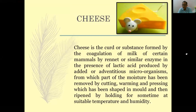Cheese is the curd or substance which is found by the coagulation of milk — it is also a milk-coagulated product. Milk of suitable mammals is treated by rennet or similar enzyme in the presence of lactic acid, produced by added or adventurous microorganisms, from which part of the moisture has been removed by cutting, warming, and pressing, and which has been given a shape in the mold and later ripened by holding for some time at suitable temperature and humidity. That is known as cheese.